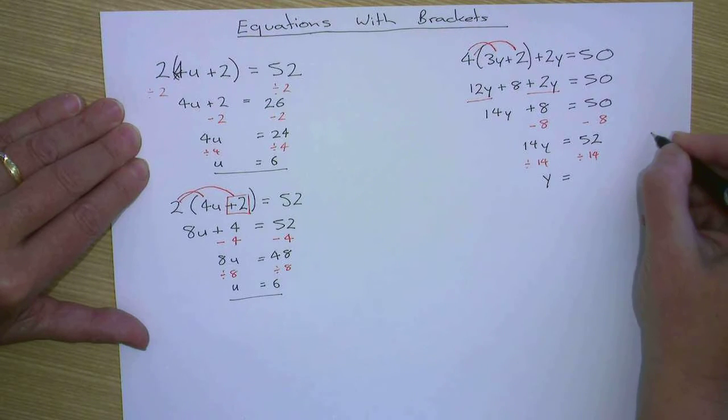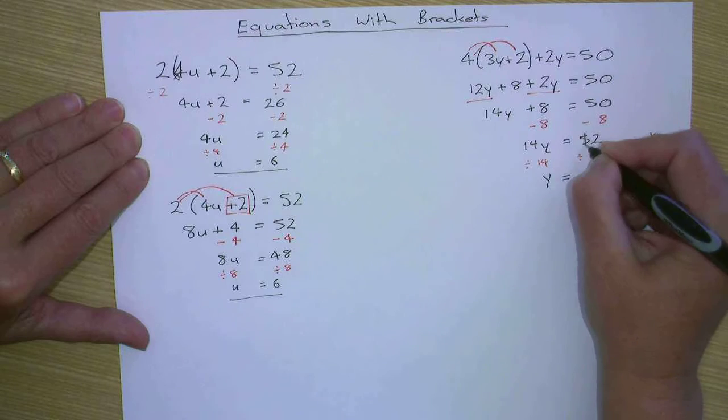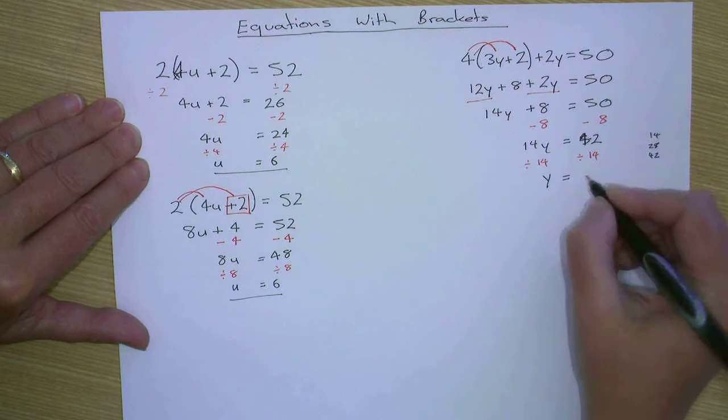Hang on. Fourteen, twenty-eight, forty-two. Actually that should be forty-two, not fifty-two. So that's three times. y equals three.